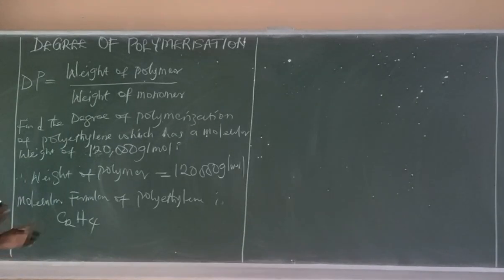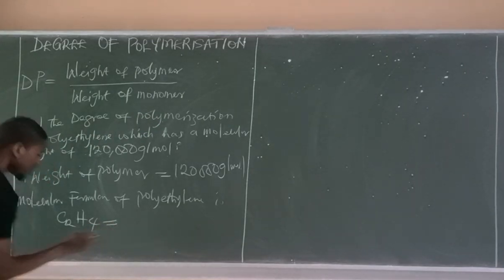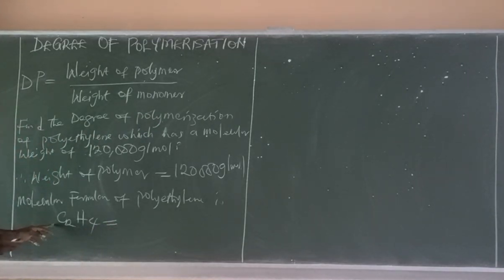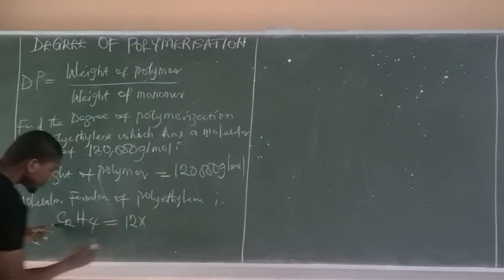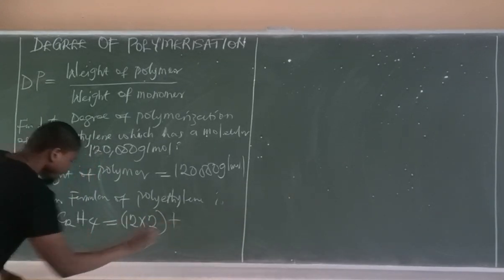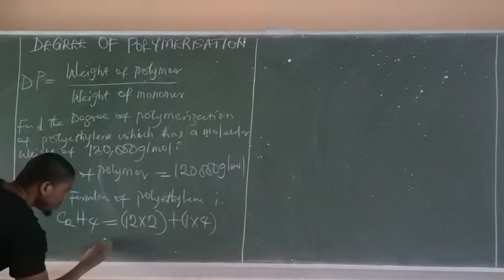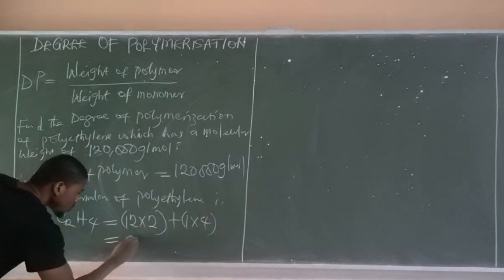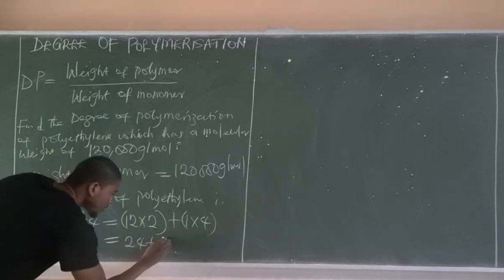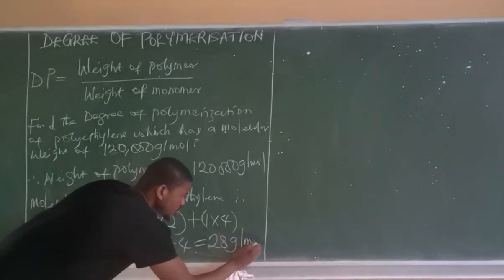The monomers are simply carbon and hydrogen, which combine together to form the polymer. To find the molecular weight of the monomer: carbon has an atomic mass of 12, so we have 12 × 2, plus hydrogen has an atomic mass of 1, so we have 1 × 4. That gives us 24 + 4 = 28 grams per mole.